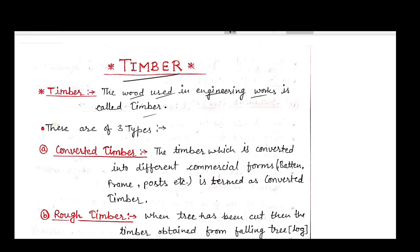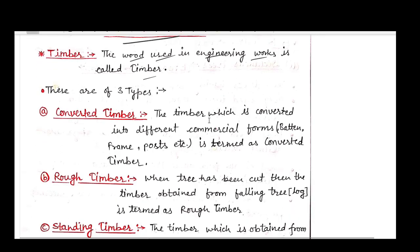There are three types of timber. First is converted timber, second is rough timber, and third is standing timber. Converted timber, as the word defines, is converted into different commercial forms like battens, frames, and posts which are used for doors and windows.